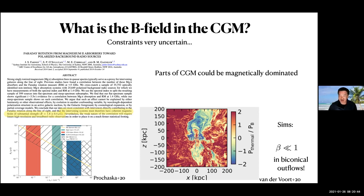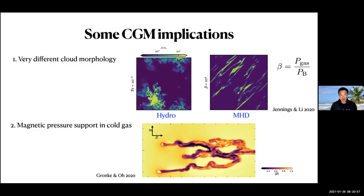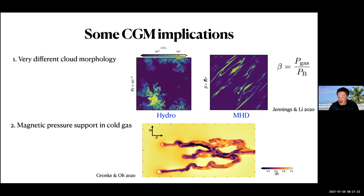Theory is very unclear at this point. The FIRE simulations are always thermally dominated in the halo, but it's still early days. What are some implications of magnetic fields in the CGM? They completely change cloud morphology. In recent simulations by Michael Jennings, even when the magnetic energy density is only 1/10,000 of the thermal pressure, you get filaments instead of round clouds — the morphology is completely different.